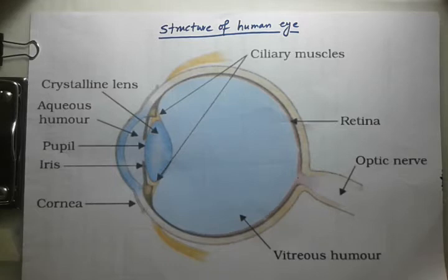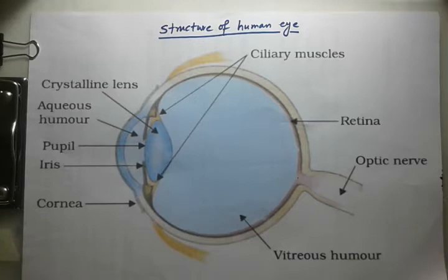The iris regulates the amount of light entering the eye. In bright light, the pupil becomes small. In dim light, the pupil opens up completely through the relaxation of the iris.